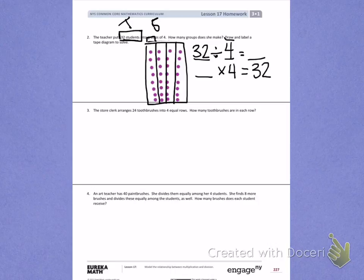Number 3. The store clerk arranges 24 toothbrushes into 4 equal rows. How many toothbrushes are in each row? When I look at this information, I see they have 24 toothbrushes. That's my total. They are putting the toothbrushes into 4 equal rows. Rows are also my groups. So I know my total and I know my groups. If I know the total, I have to do a division problem.